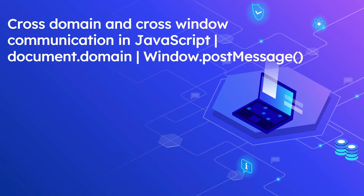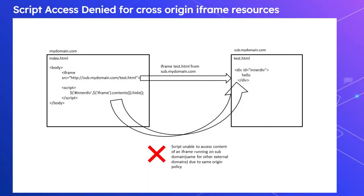Let us now see the default behavior of interacting with resources between two different origins. There is mydomain.com and sub.mydomain.com. In mydomain.com there is an index.html, and sub.mydomain.com has test.html, which contains a simple HTML with an inner div with an id. index.html iframes that test.html from sub.mydomain.com. There is a script in the mydomain.com index.html to hide this specific inner div using iframe.contents, but the script will not be able to hide this element because the same-origin policy blocks it.